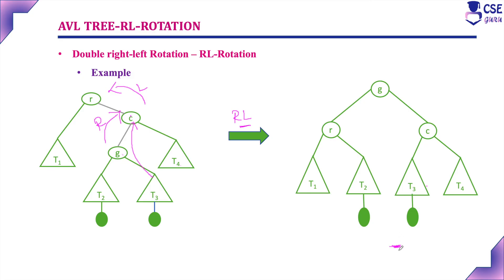An AVL tree is a height-balanced binary search tree where we preserve the balance factor — it should be 0, +1, or -1. If after any new insertion the balance factor becomes +2 or -2, the AVL tree is unbalanced and we perform a rotation. There are four types: single right, single left, double left-right, and double right-left rotation. All these have been discussed with examples. We will further discuss these rotations in detail with more examples.